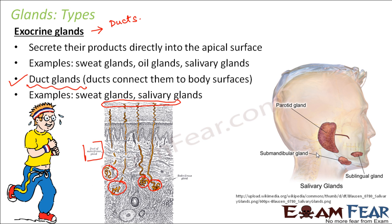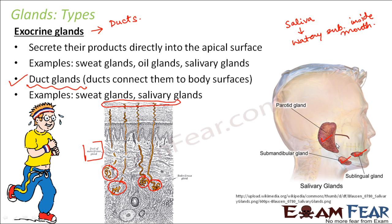In a similar way, the salivary gland produces saliva — the watery substance inside your mouth. There are three salivary glands that are part of your oral cavity, and they secrete saliva. The glands are located deep inside, but they are connected to the surface through ducts, which is why the saliva is secreted onto the inner surface of your mouth and you can feel it. These types of glands are called duct glands or exocrine glands.